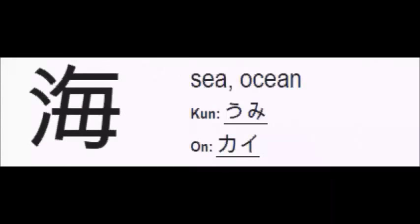The next kanji is the Sea or Ocean kanji. This kanji has 9 strokes: 1, 2, 3, 4, 5, 6, 7, 8 and 9. This is Umi kanji. The Kunyomi reading is Umi and the Onyomi reading is Kai. The meanings associated with this kanji are Sea and Ocean.